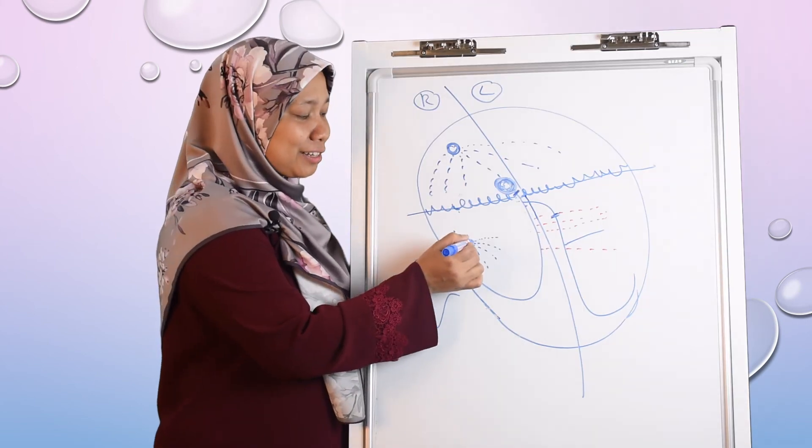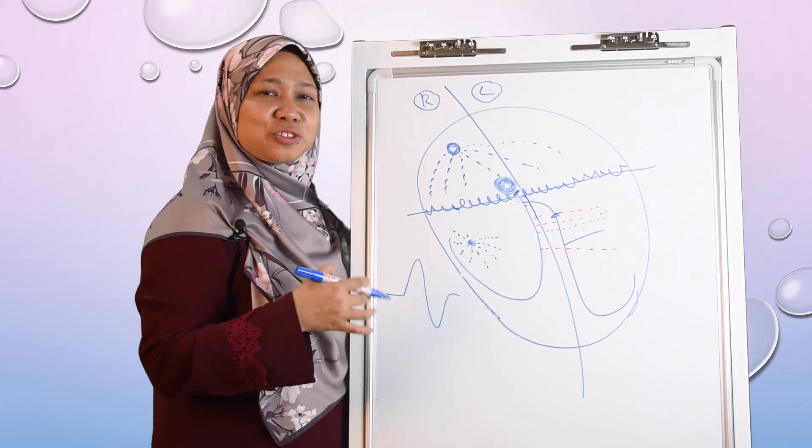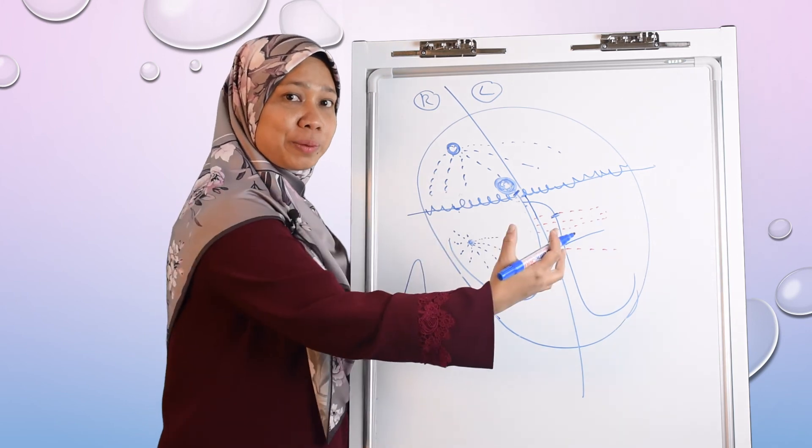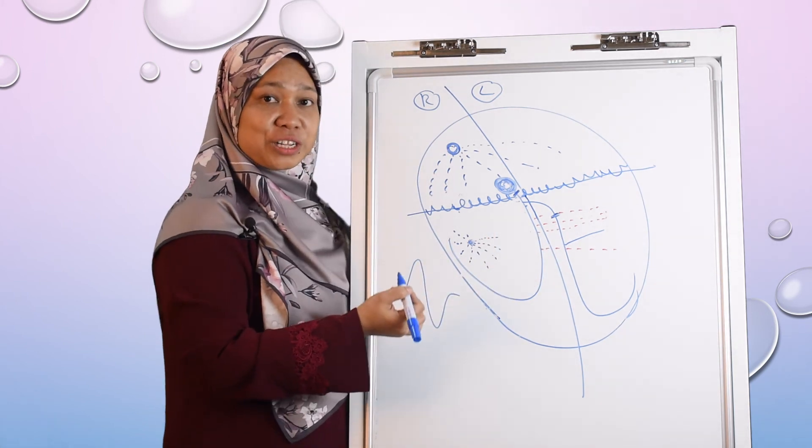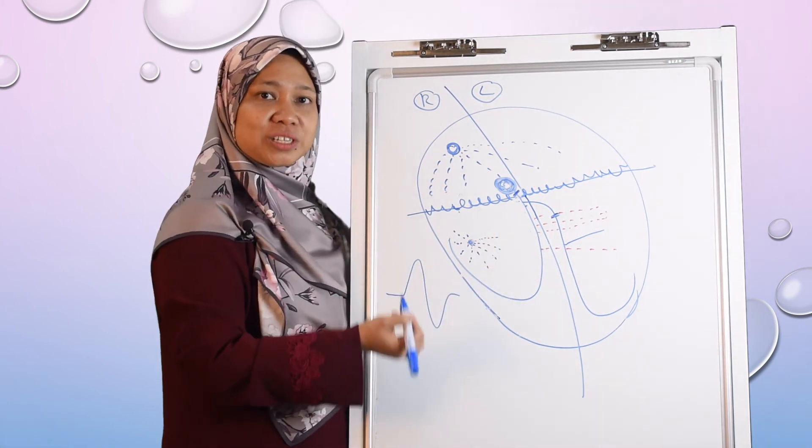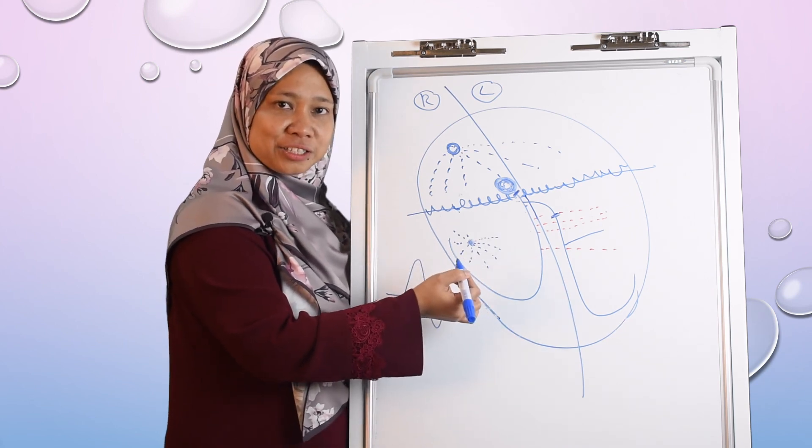So let's say this ventricular ectopic decides to be more active and produce more impulses, then instead of ventricular ectopic, it can become ventricular tachycardia. And this situation is very dangerous.